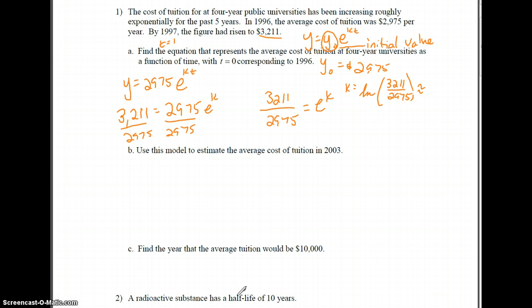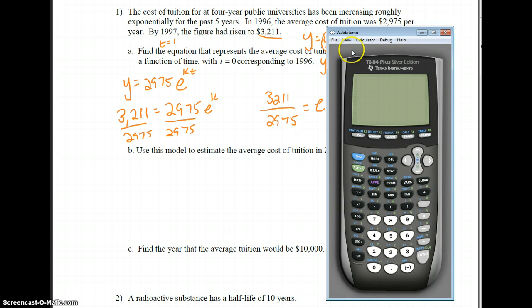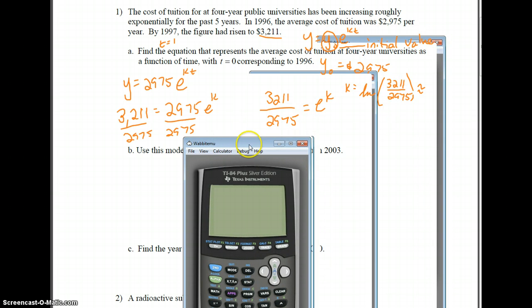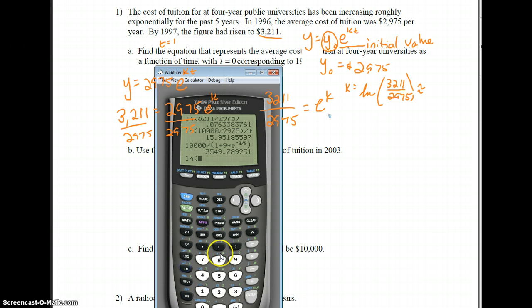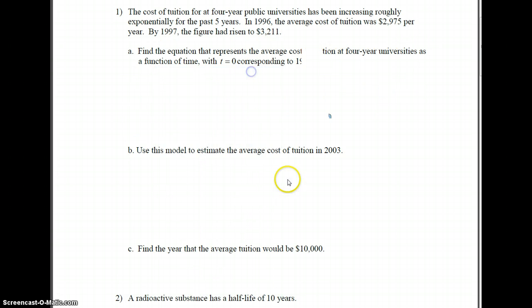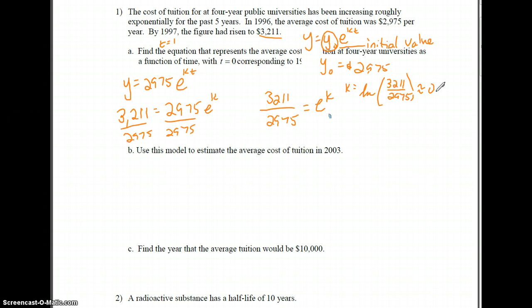I'm going to calculate that in my calculator. Using my TI-84, I'm going to have ln of 3,211 divided by 2,975, and I get 0.076. So my equation is going to be y equals 2,975 e to the 0.076 t. This is my model that models my situation.